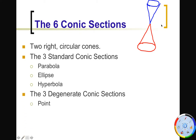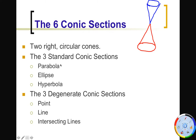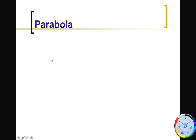Those last cases — the line, two intersecting lines, and the point — are what we call degenerate conic sections, because they're not really shapes that are interesting to us. I will discuss the circle in a little bit of context later, but right now we're going to focus fully on the parabola.